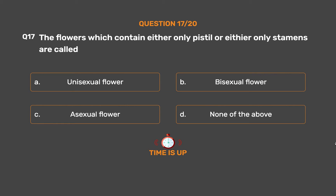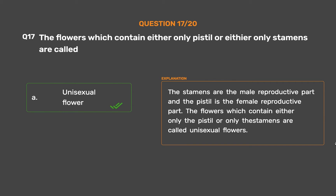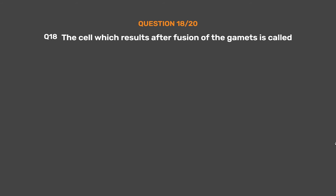The correct answer is Option A – Unisexual flower. The stamens are the male reproductive part and the pistil is the female reproductive part. The flowers which contain either only the pistil or only the stamens are called unisexual flowers.